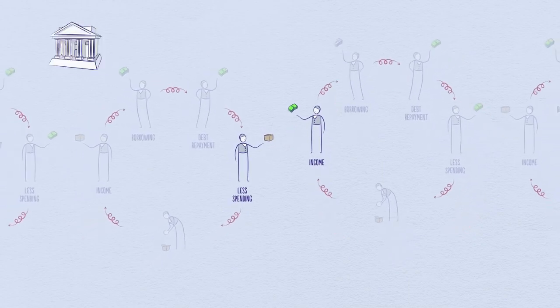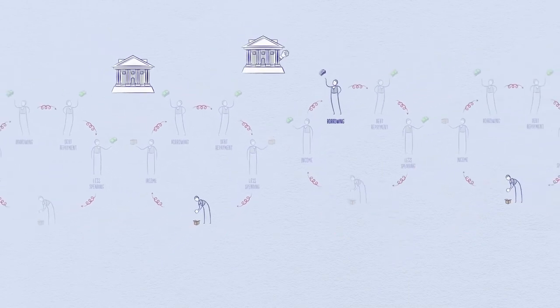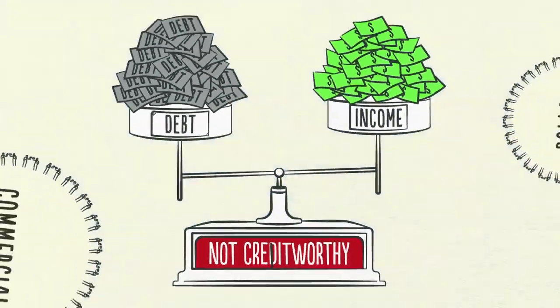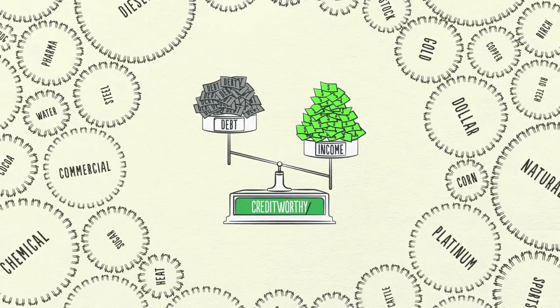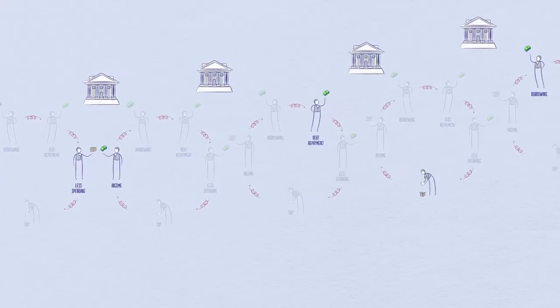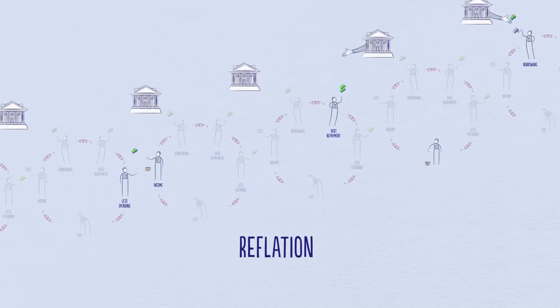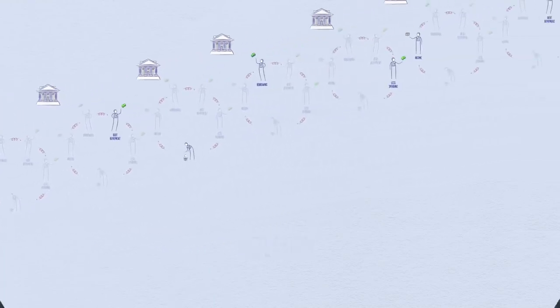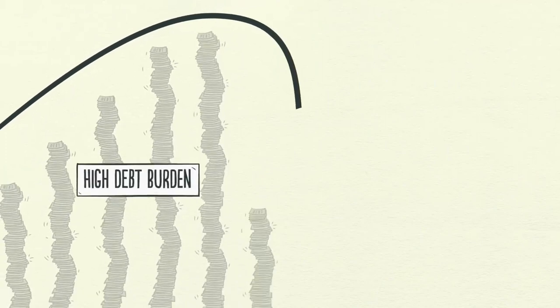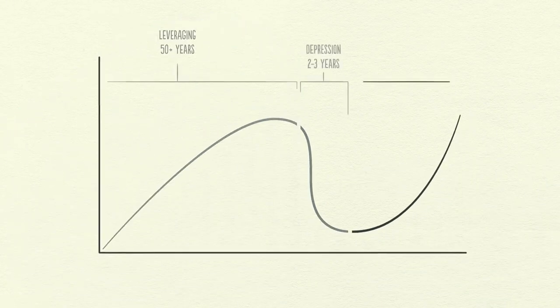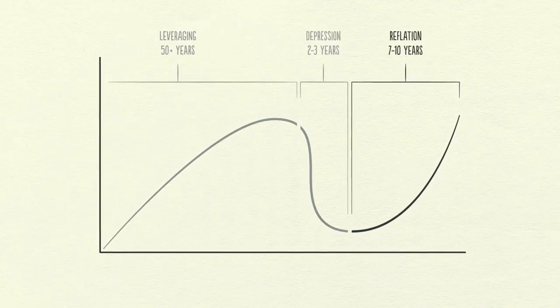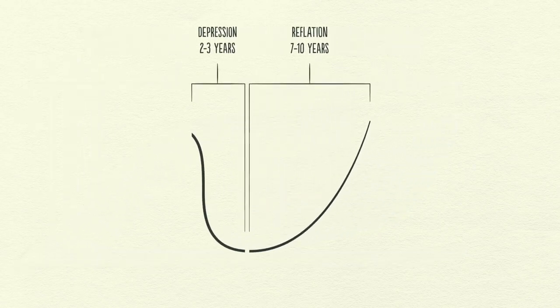When incomes begin to rise, borrowers begin to appear more creditworthy, and lenders begin to lend money again. Debt burdens finally begin to fall. Able to borrow money, people can spend more, and eventually the economy begins to grow again, leading to the reflation phase of the long-term debt cycle. Though the deleveraging process can be horrible if handled badly, if handled well it will eventually fix the problem. It takes roughly a decade or more for debt burdens to fall and economic activity to get back to normal — hence the term 'lost decade.'